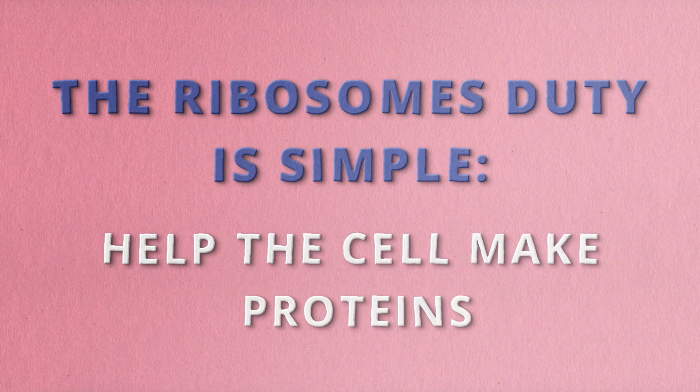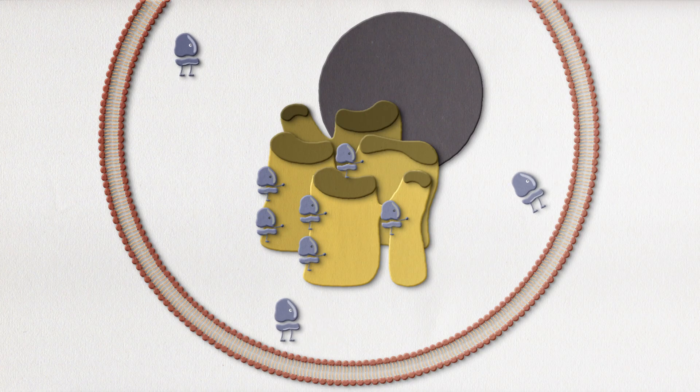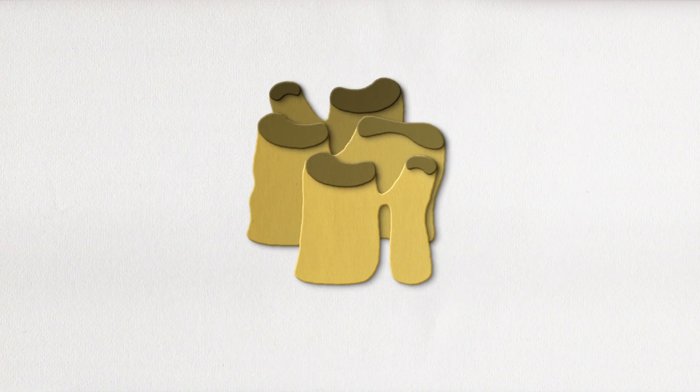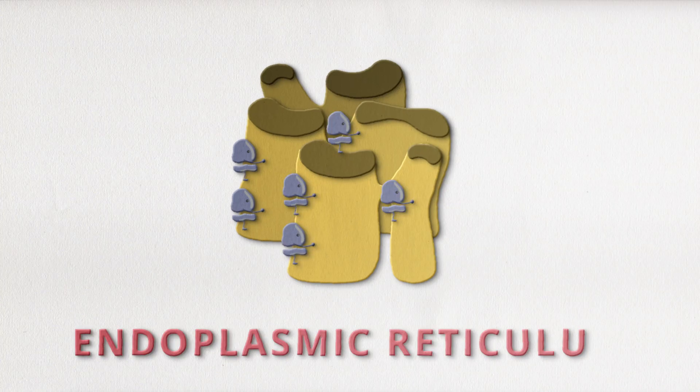The ribosome's duty is simple. Help the cell make the proteins it needs to function. The location of the ribosome within the cell helps dictate what kind of protein it makes. For example, ribosomes can attach to the endoplasmic reticulum, making it what we call a rough endoplasmic reticulum.